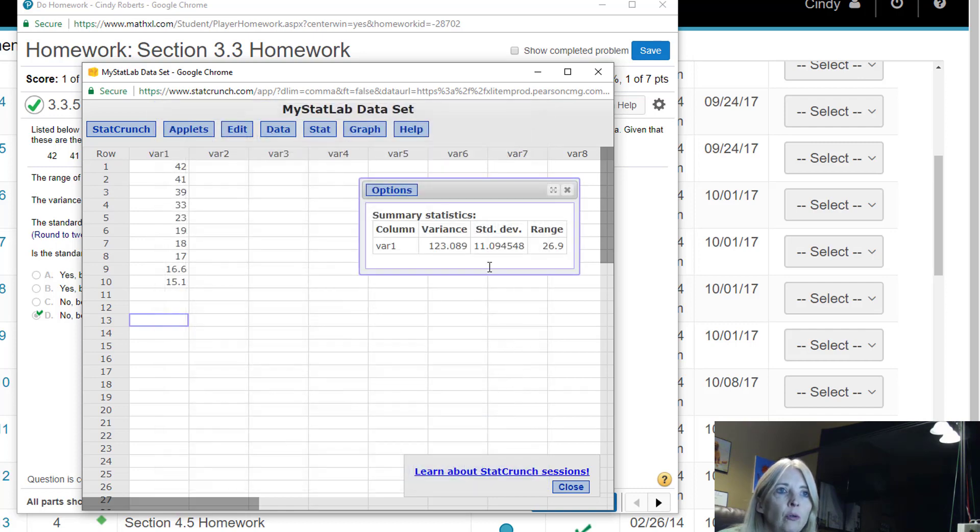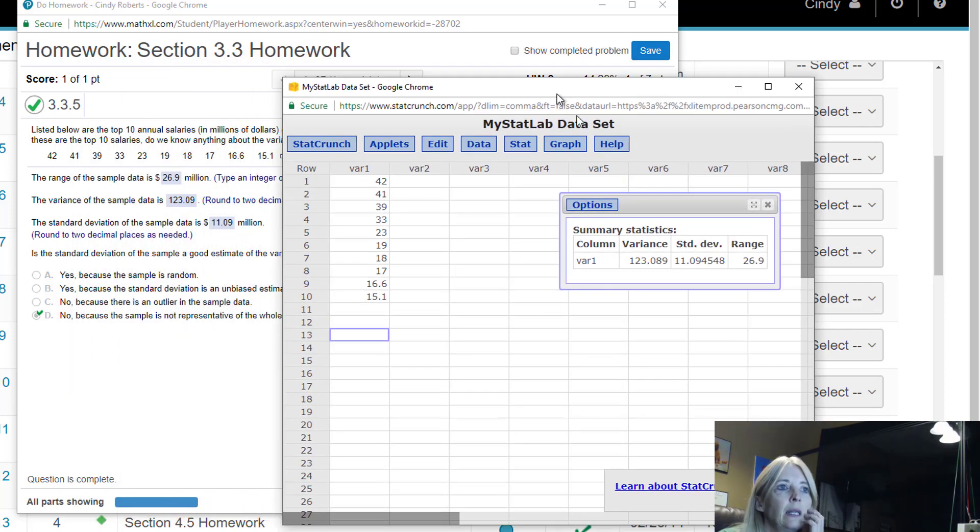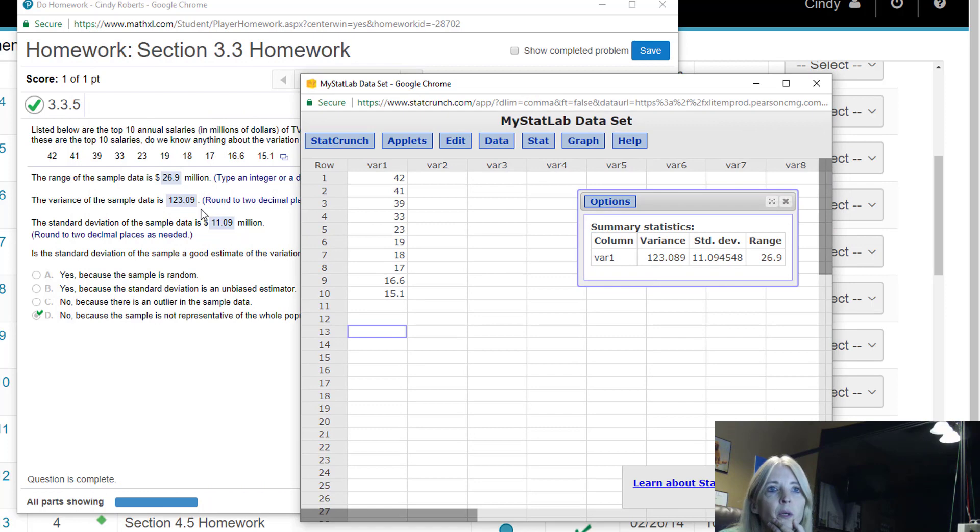So I hit Compute and I see that I get these values: 122.309, the range 26.9, and 11.09. So again, please, please, I'm begging you, learn to use technology. Because now it's like, well, what are these numbers?